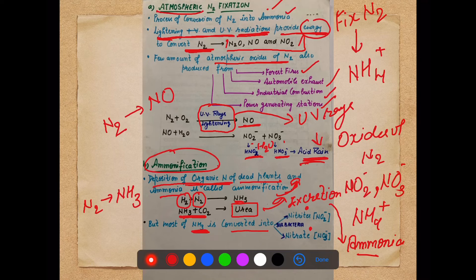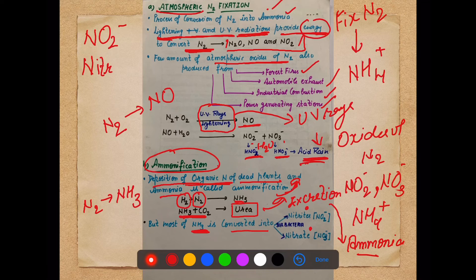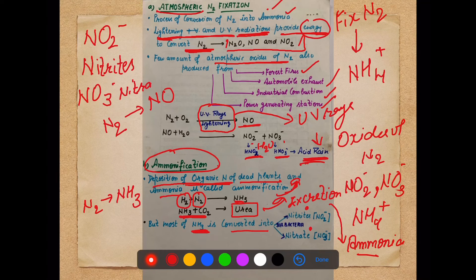An important point for students: please be careful with NO2⁻ and NO3⁻. Many students write them in the opposite way. NO2⁻ is nitrite and NO3⁻ is nitrate. Please check them twice and write them correctly.